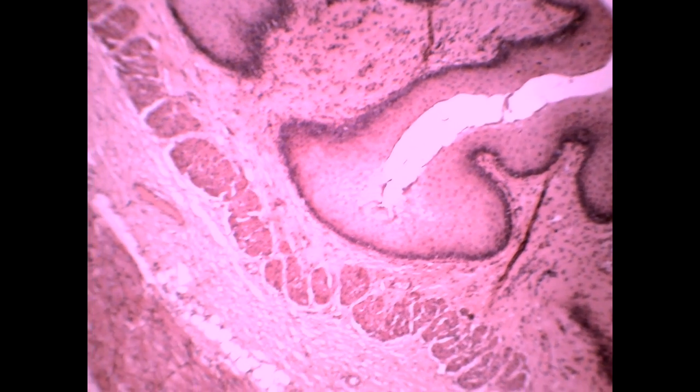The third organ, a hollow large lined by stratified squamous with a complete ring of muscularis mucosa red stain. This is esophagus cat.